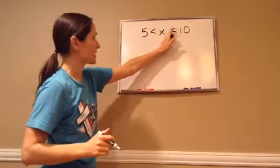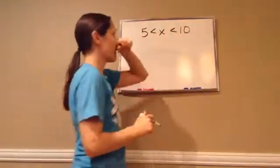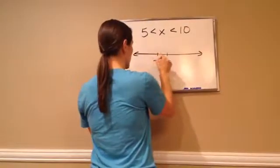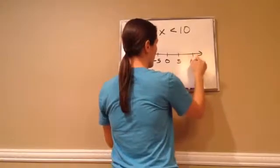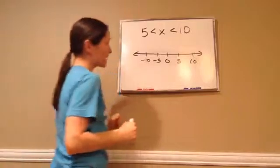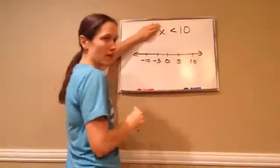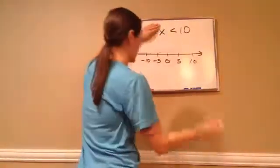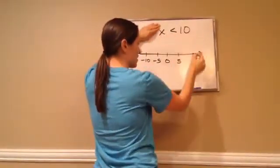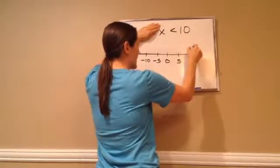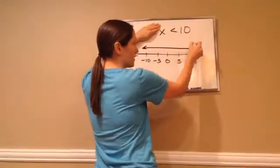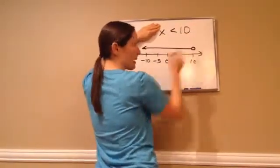5 is less than x is less than 10. The first thing I want you to do is go ahead and draw a number line, and you can just put negative 5, negative 10, positive 5, positive 10, just to kind of get you started. The best way to do this is just cover this up for a minute and let's show what this is. So x is less than 10. Here's 10, so x is less than — it's going this way. Is it equal to 10? No, it's just less than 10, so we make sure we keep an open circle.